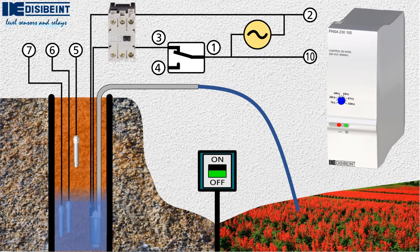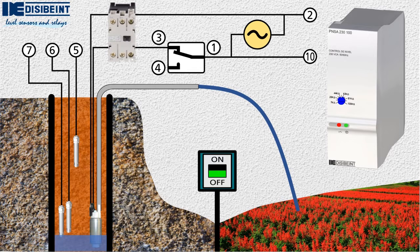When the relay detects that the water level is below the minimum probe, it switches, stopping the pump.